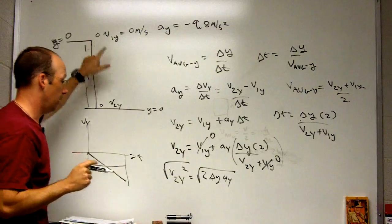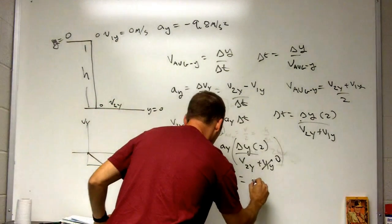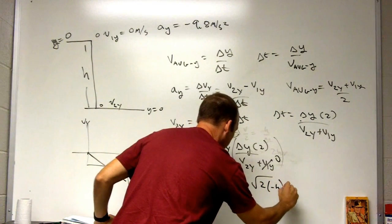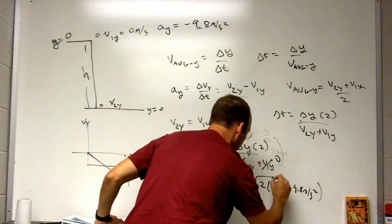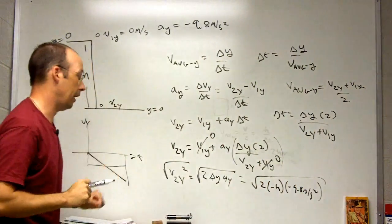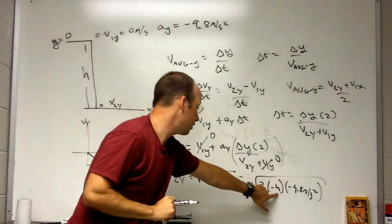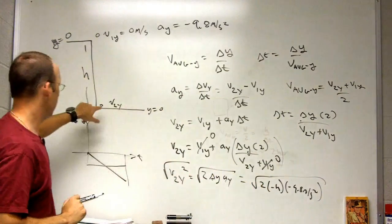So I get the square root of two times negative h times negative 9.8 meters per second squared. And you should check the units and everything like that. You should check: as h gets larger, then this velocity gets larger - that makes sense too.